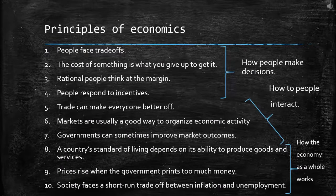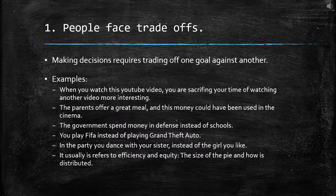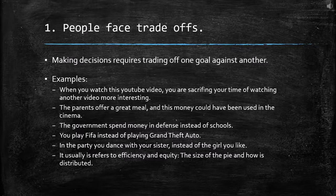The first principle is: people face trade-offs. Making decisions requires trading off one goal against another. We can understand this better through examples. For example, when you watch this YouTube video, your time could have been spent watching another more interesting video. Or when parents offer a great meal, that money could have been used at the cinema instead. This is the trade-off — the meal or the cinema; we cannot have both.